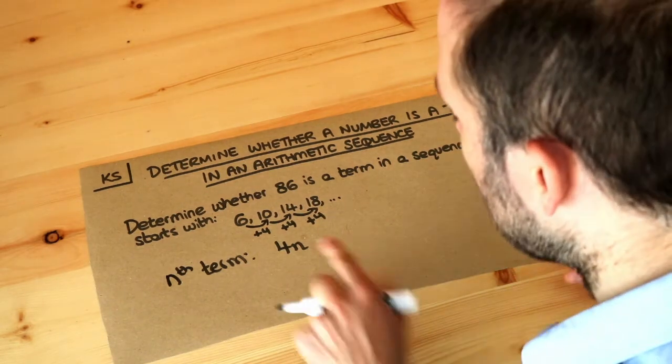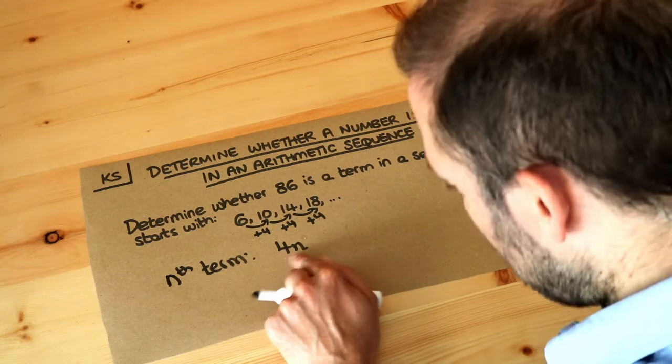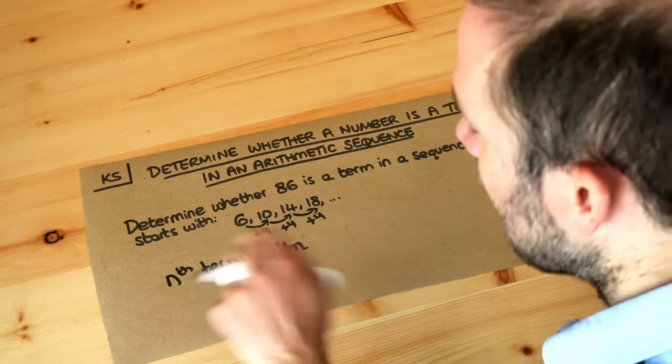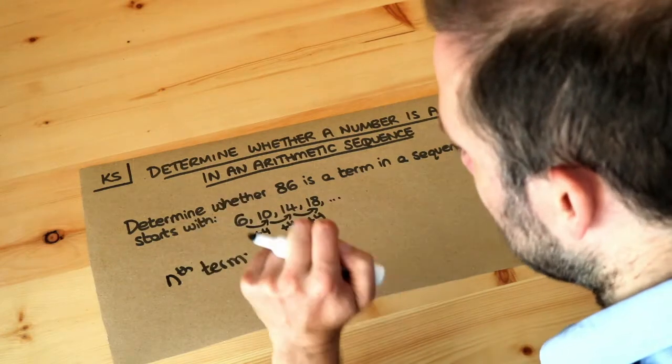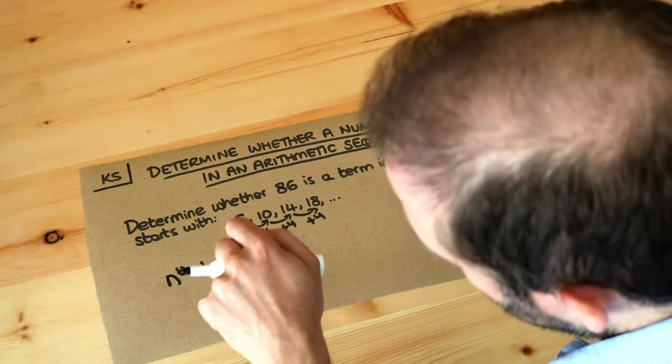And then what you do is you think well what is the first term of this sequence. If we want the first term of the sequence with this formula, well when we want the first term then n is going to be one because n is the position in the sequence.